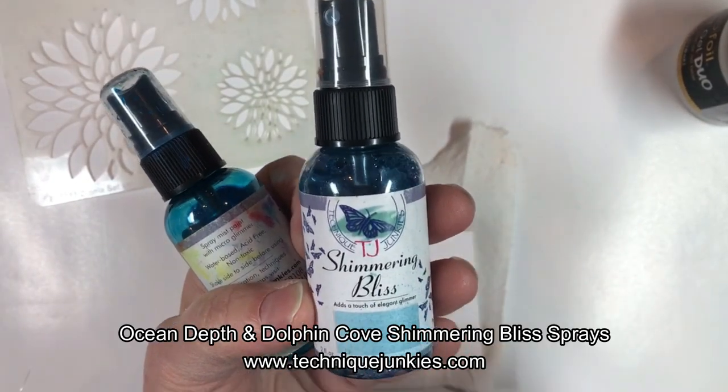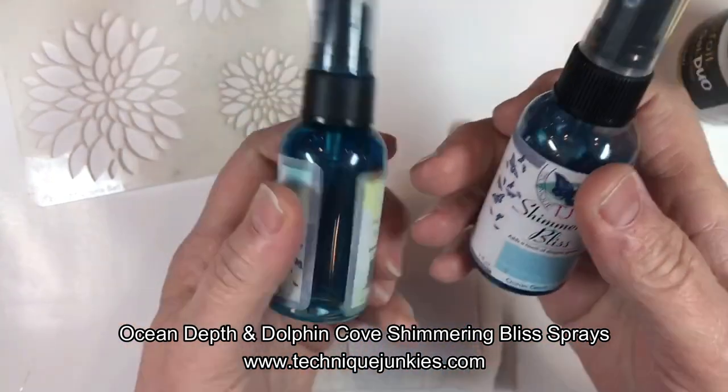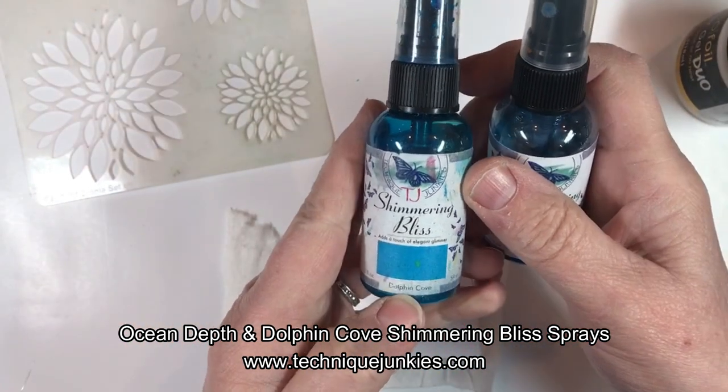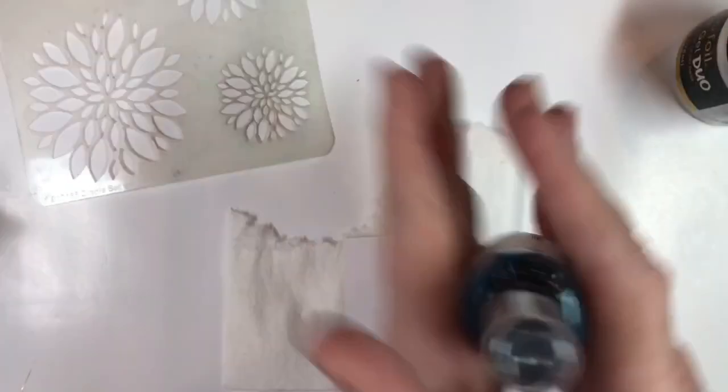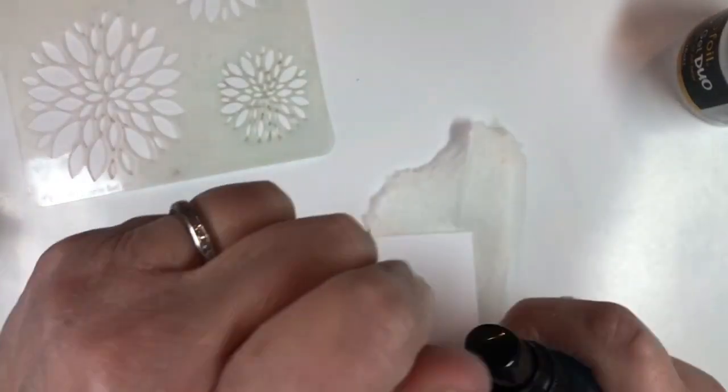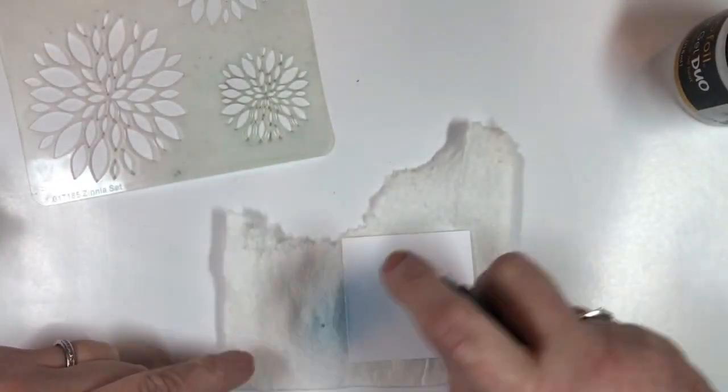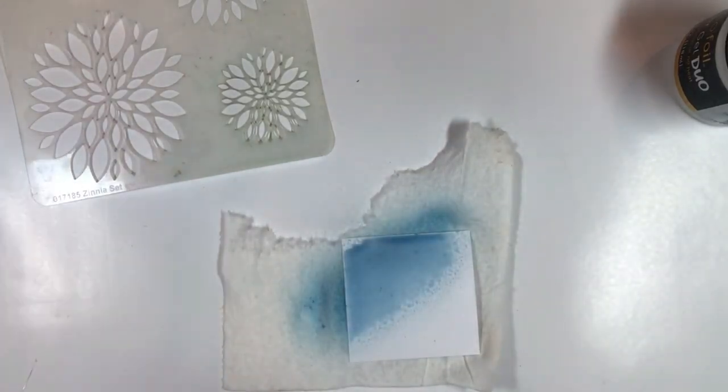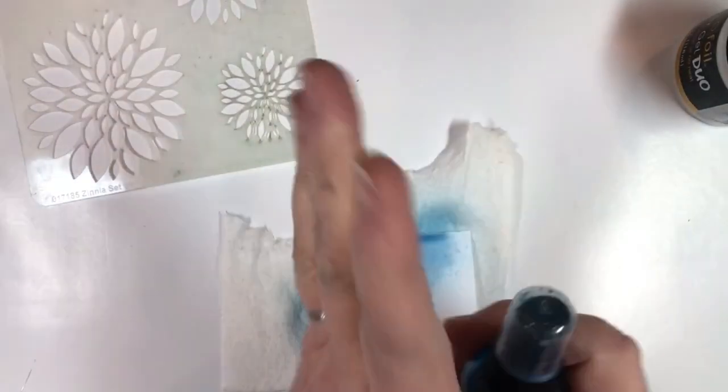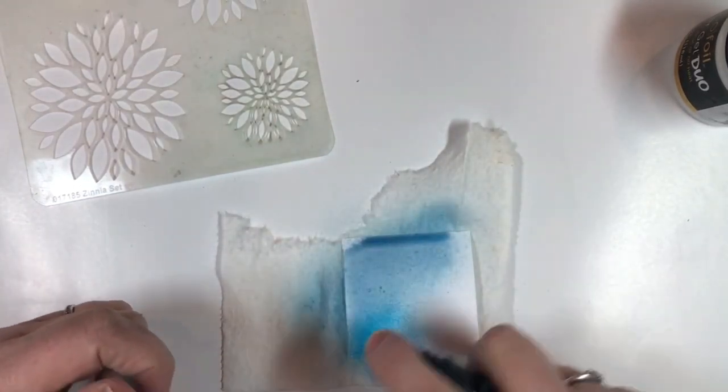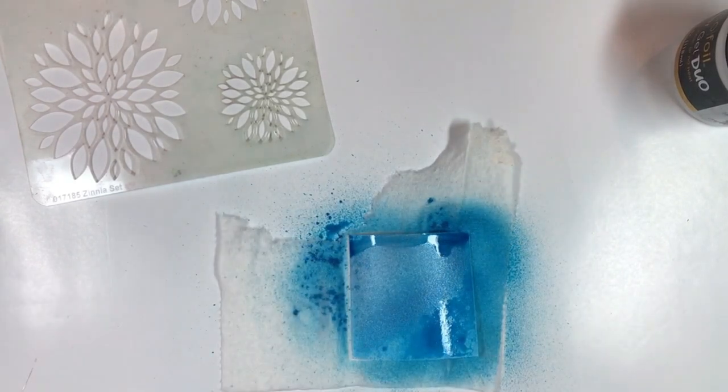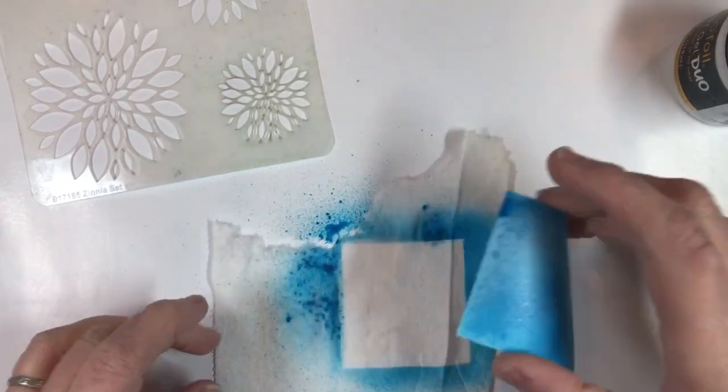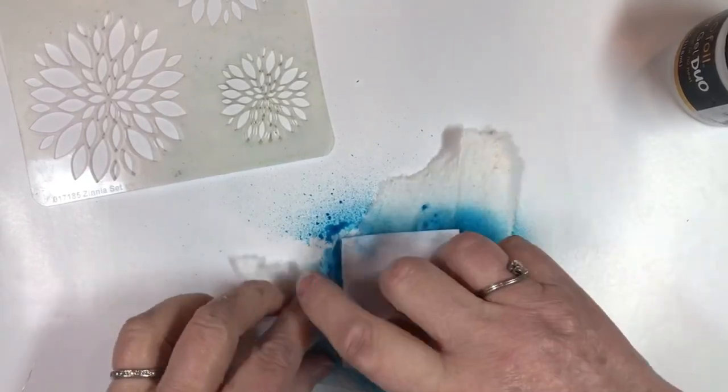I'm going to be using two colors of the Technique Junkie Shimmering Bliss Spray, Ocean Depth, which is a light blue, and Dolphin Cove, which is a little bit darker blue. Any time you use these sprays, you have to mix them. I roll them so that we can move the mica off the bottom, and then I'm just going to quickly put half and half and kind of cover that up a little bit.